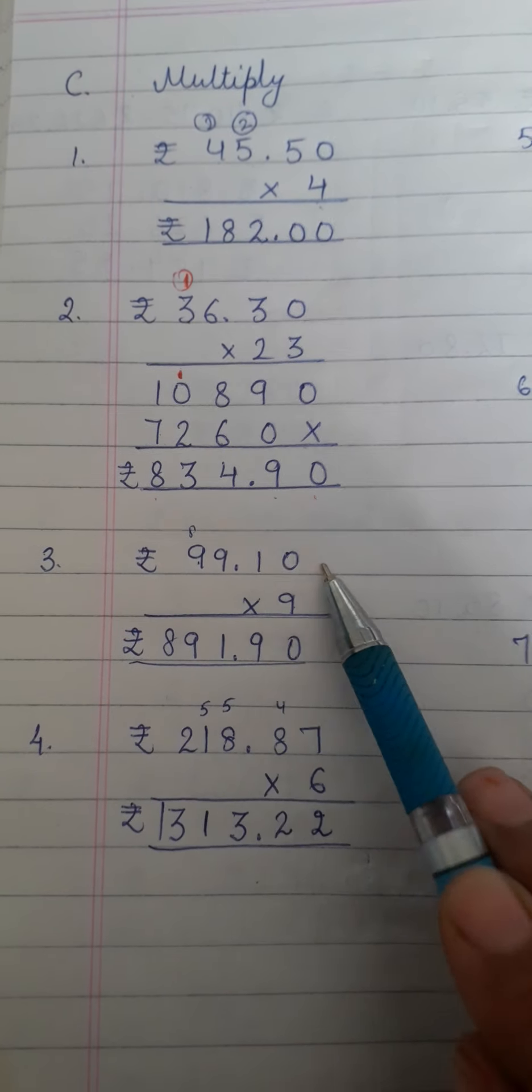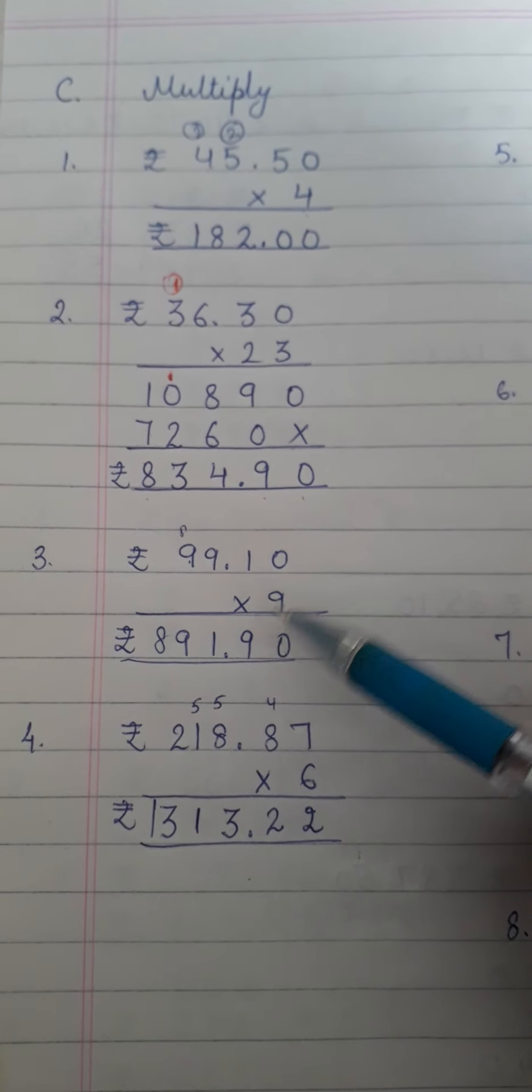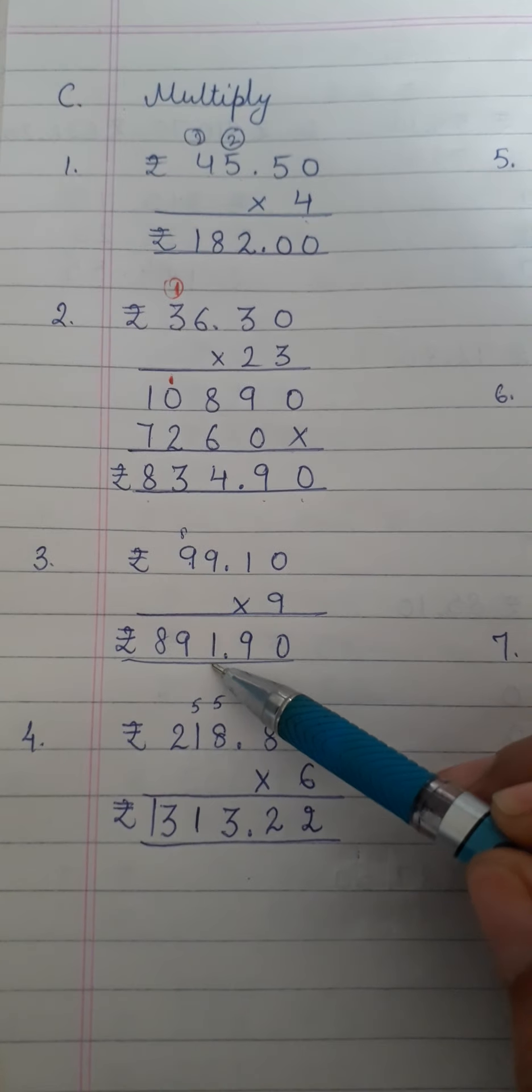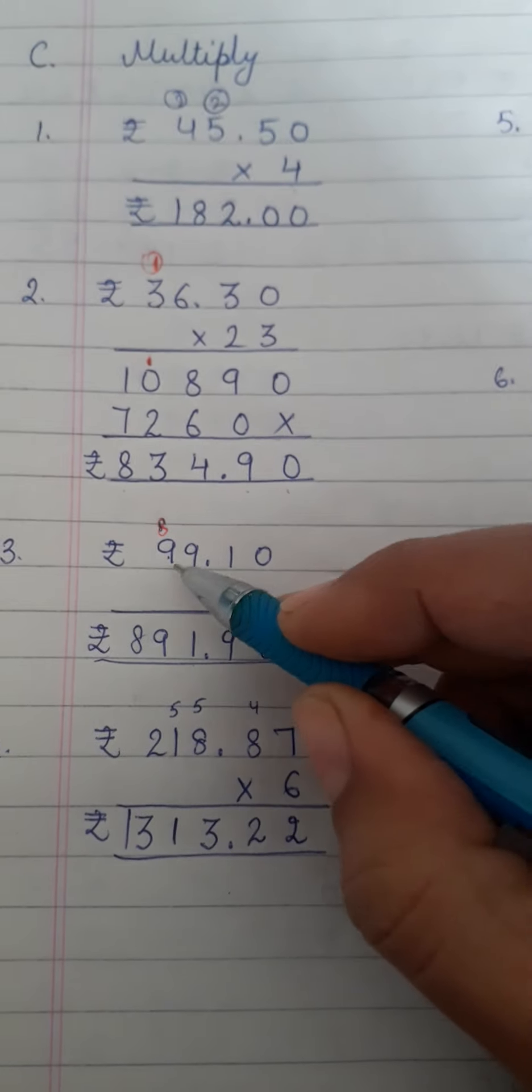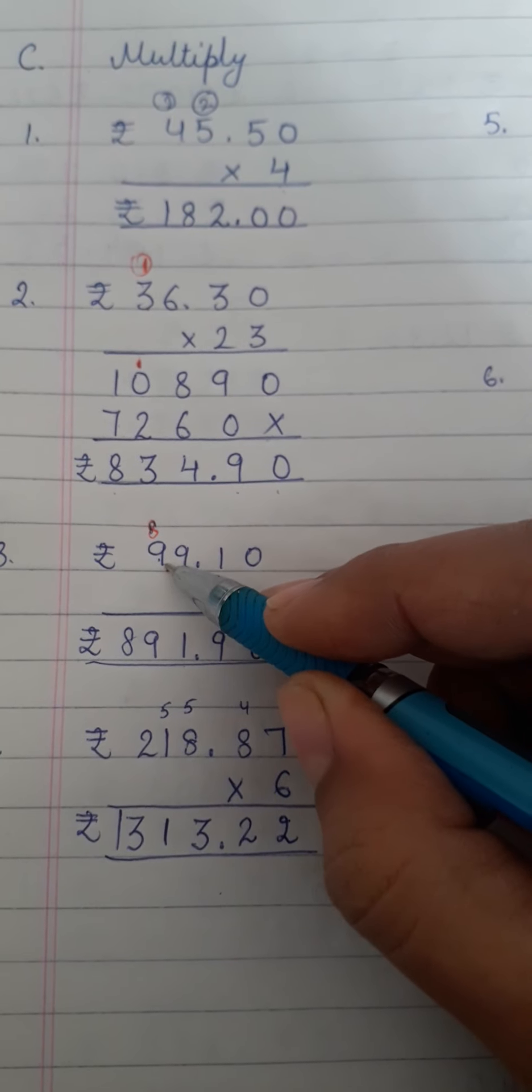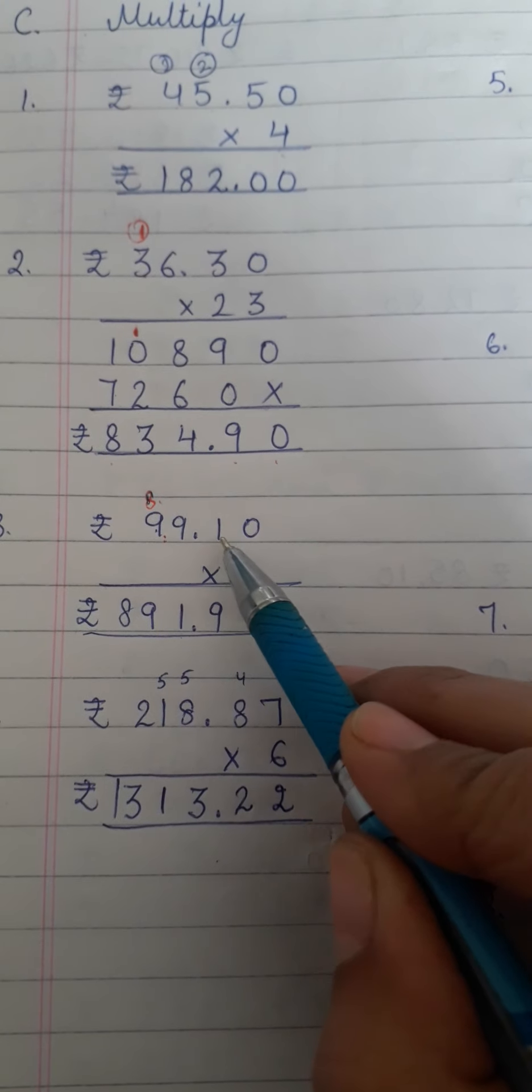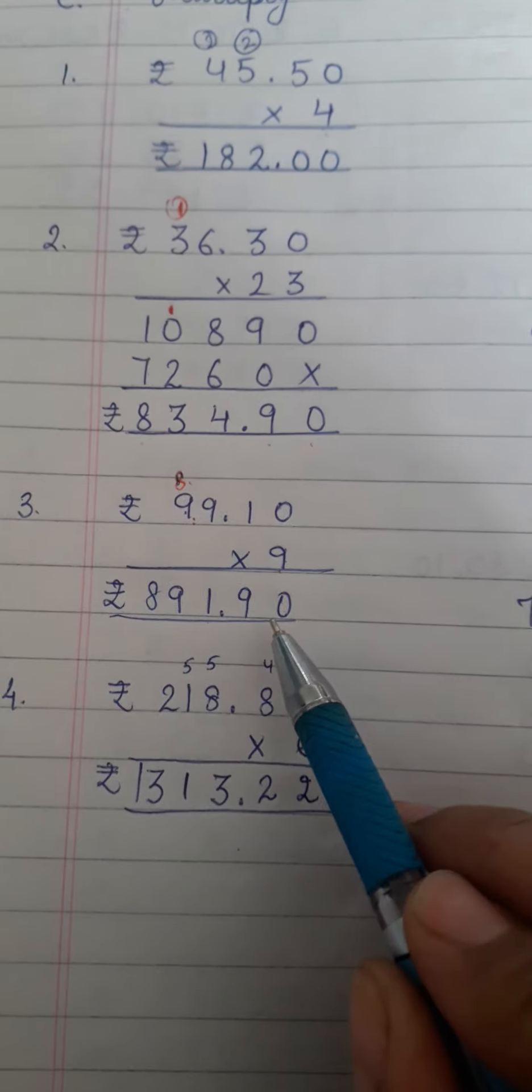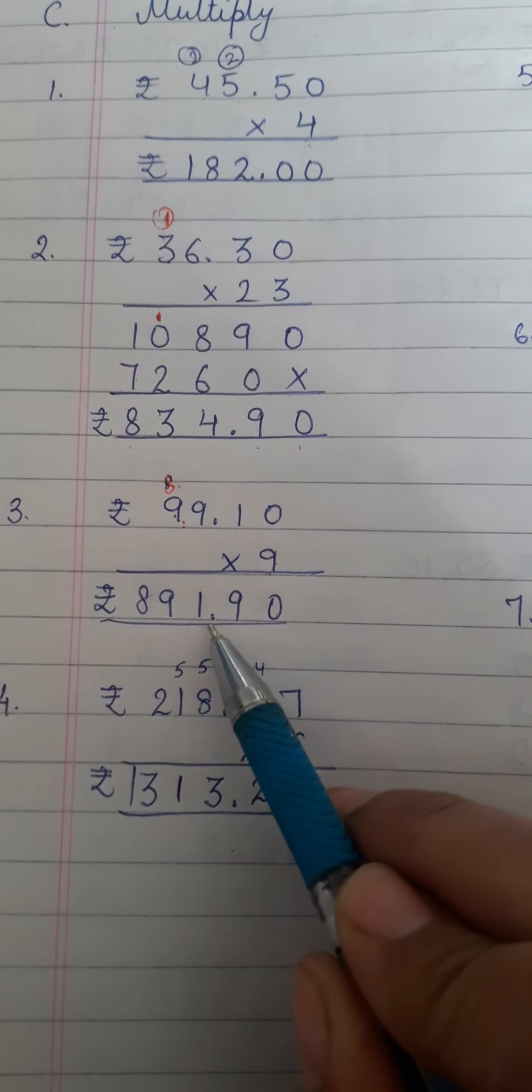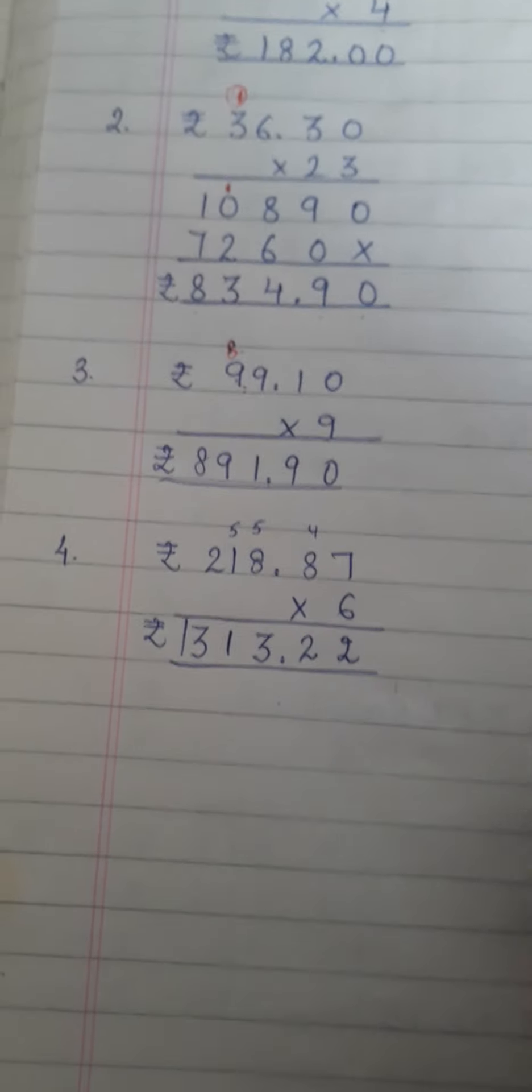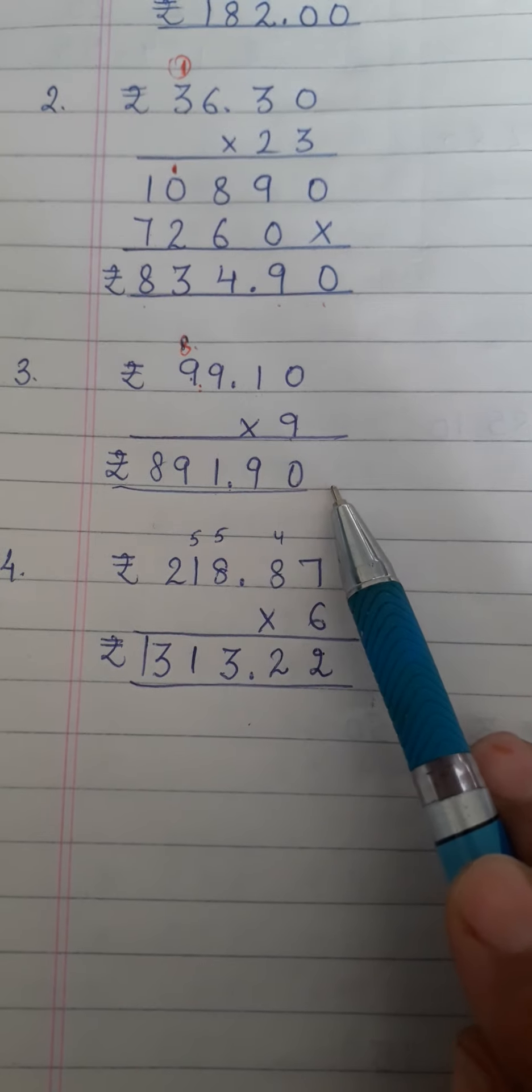99.10 multiply by 9. 9 zeros are 0, 9 ones are 9, 9 nines are 81, 1 here carry over 8. 9 nines are 81 plus 8, it's 89. Again after decimal we have 2 digits. So I have to put decimal before 2 digits from the right side. 1, 2. Here I have put decimal. So answer is rupees 891 and 90 paisa.